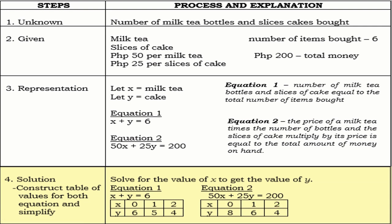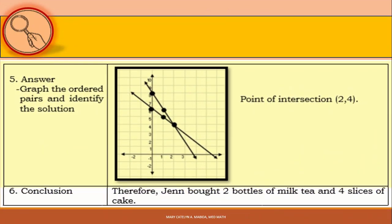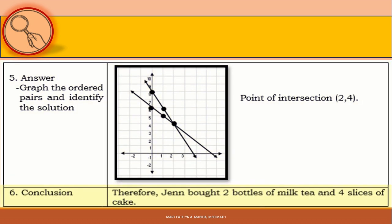To review the graphical method, check out the video of the previous lesson. Now let us graph the points. For X plus Y is equal to 6, we have the points (0, 6), (1, 5), and (2, 4). For 50X plus 25Y is equal to 200, we have the points (0, 8), (1, 6), and (2, 4). Their point of intersection is (2, 4). Therefore, Jen bought 2 bottles of milk tea and 4 slices of cake.